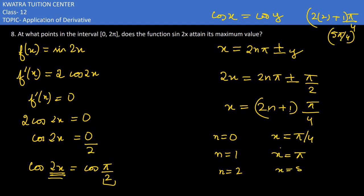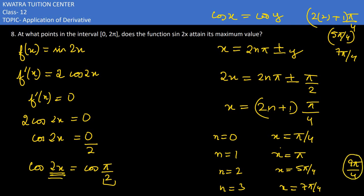For n = 2: substituting gives x = 2π + π/4 = 9π/4, which is greater than 2π, so we ignore this. Also we get x = 7π/4 from the minus case at n = 2. Notice that 9π/4 is beyond our interval [0, 2π], so valid values are only for n = 0 up to the point where values stay within [0, 2π].